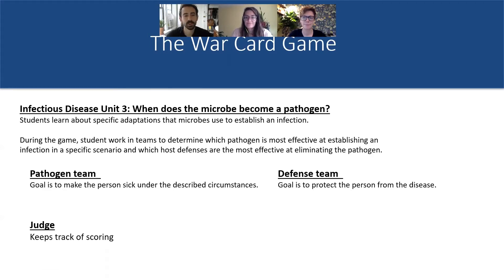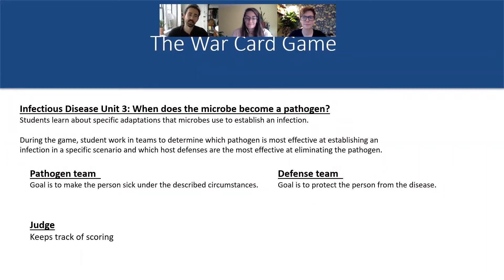During the game, students work in two sets of teams. One team will determine which pathogen is most effective at establishing infection during a specific scenario, and the other team will determine which host defenses are the most effective at eliminating a pathogen. So the pathogen team's goal is to make a person sick, and the defense team's goal is to protect a person from disease. There will also be a judge, making this a five-person game. The judge's job is to keep track of scoring as well as time.